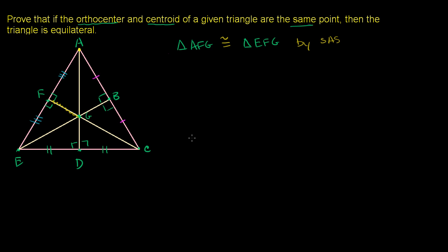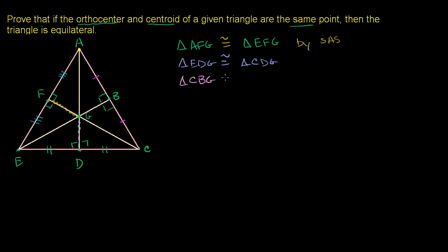We can use that exact same argument for the other pairs. By the same reasoning — side-angle-side — triangle EDG is congruent to triangle CDG. And similarly, triangle CBG is congruent to triangle ABG. So all six smaller triangles formed inside are pairwise congruent.